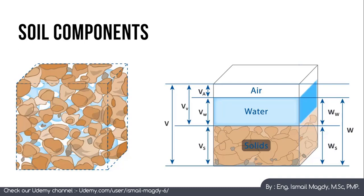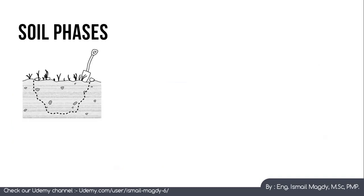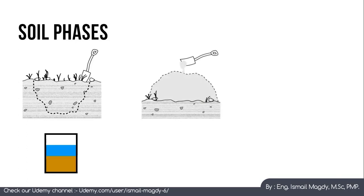Here we can see an undisturbed soil embankment in its natural form, showing the distribution of solid particles, water content, and air content. Now, if we start excavation and remove this soil from its place, the soil will have more air content, which means it will have a bigger volume for the same weight, since air has no weight.